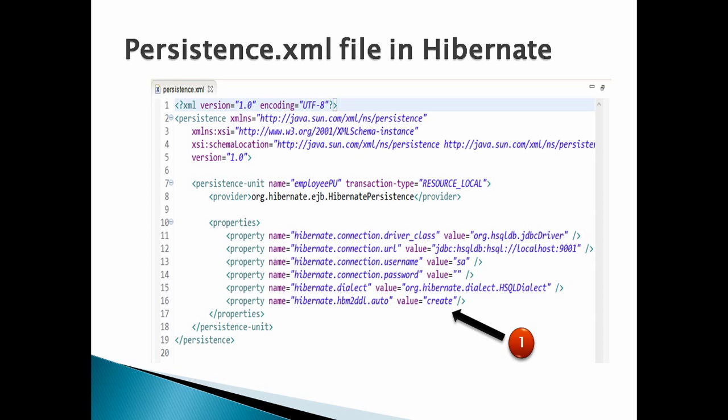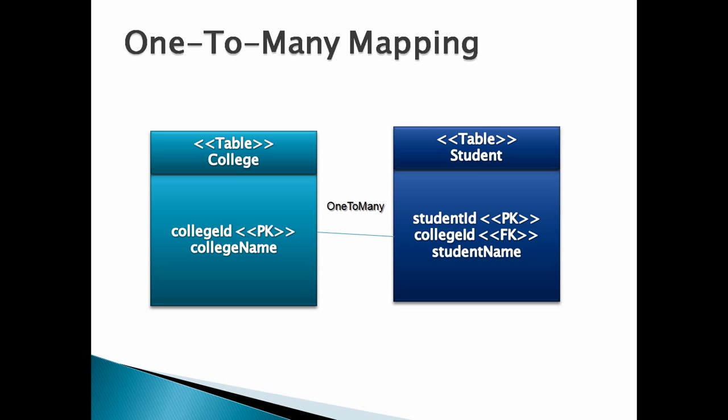Let's see what one-to-many mapping is in the database model. One college can have many students — college to student is a one-to-many relationship, and student to college is a many-to-one relationship. The college table has a primary key as college ID. In order to make one-to-many mapping between college and student, the college ID has to be a foreign key in the student table, as shown in the figure.